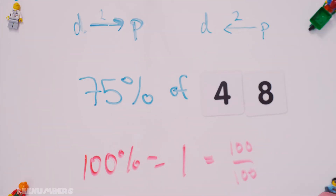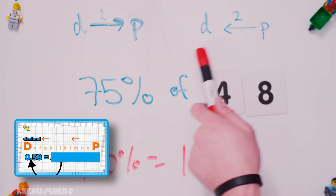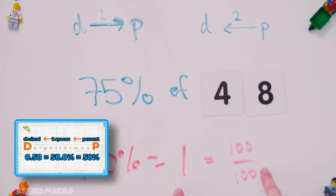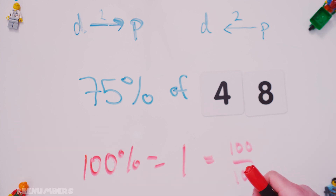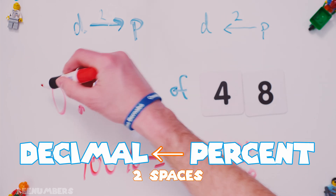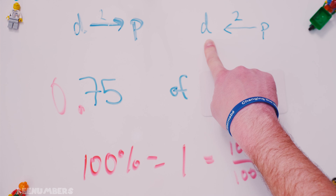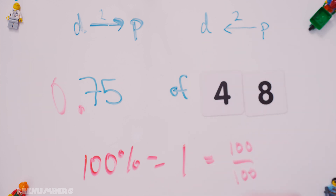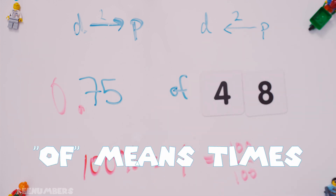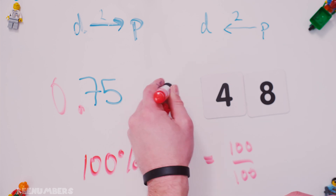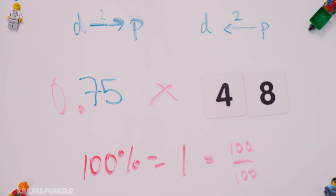Bye. Seventy-five percent of 48. We're going to convert a percent to a decimal. Or you can jump straight to the decimal by observing that 100 one-hundredths is the same thing as one. 100% is equal to one. So this is going to be simply 0.75. You drop the percent because you go backwards two spaces when you convert from a percent to a decimal. You better watch the last video. 0.75 of 48 — that's the same thing as saying times. So 0.75 times 48.